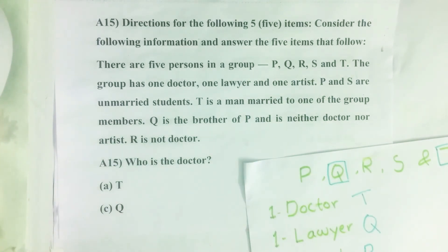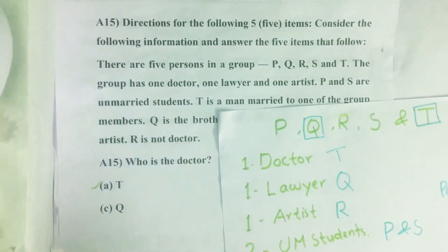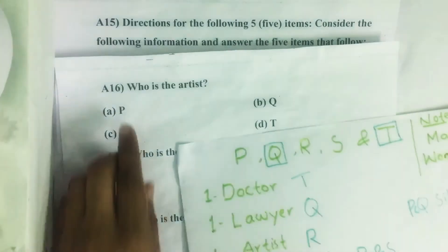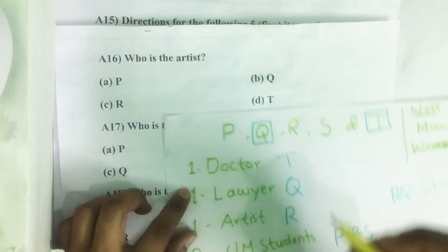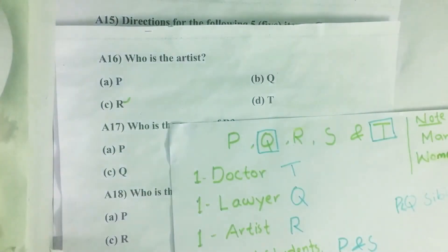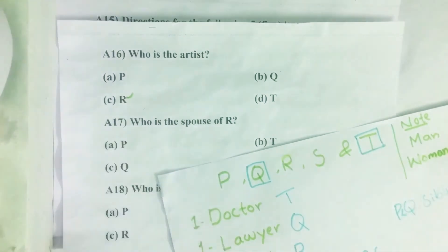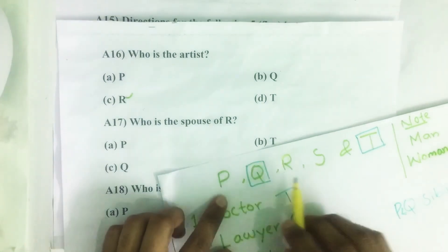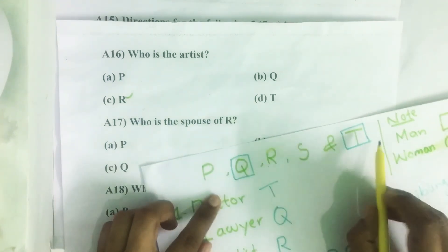First question — who is the doctor? The doctor is T. Question number 16 — who is the artist? The artist is R, option C. Next, question number 17 — who is the spouse of R? Since T is the married man in the group, the spouse of R is T. The answer is B.